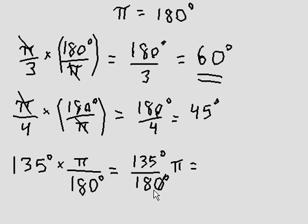I can divide top and bottom by 45. The degrees cancel out anyways, and I obtain 3 over 4, and the pi remains.